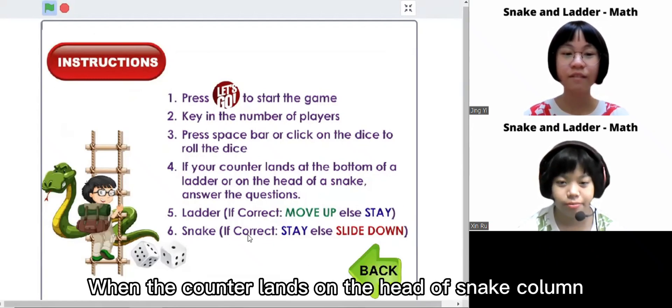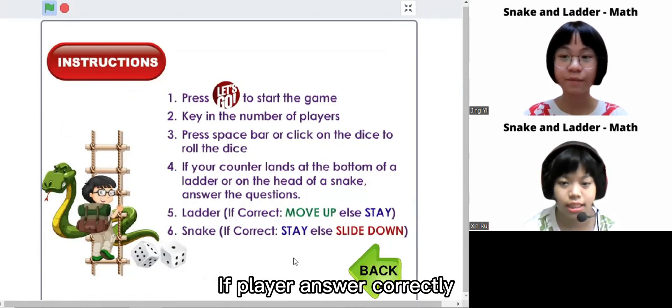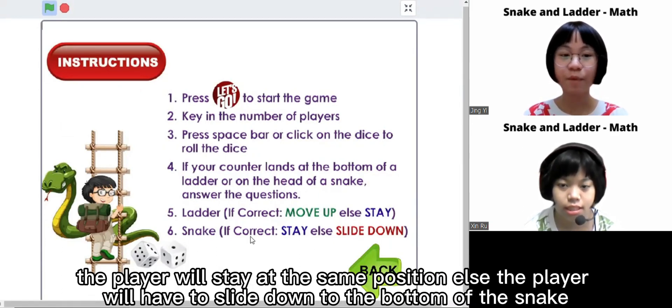When the counter lands on the head of snake column, players will need to answer the random question. If player answers correctly, the player will stay at the same position, else the player will have to slide down to the bottom of the snake.